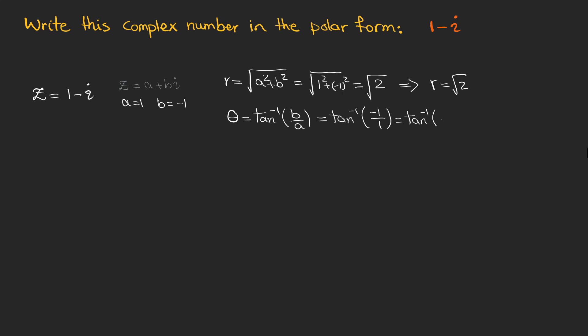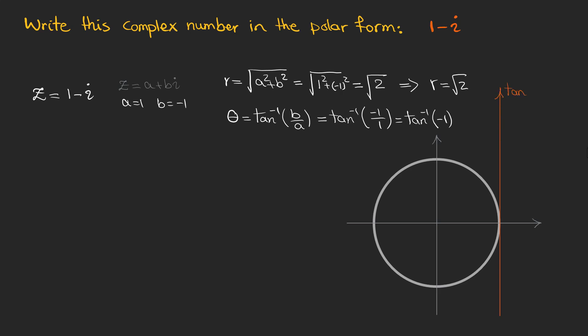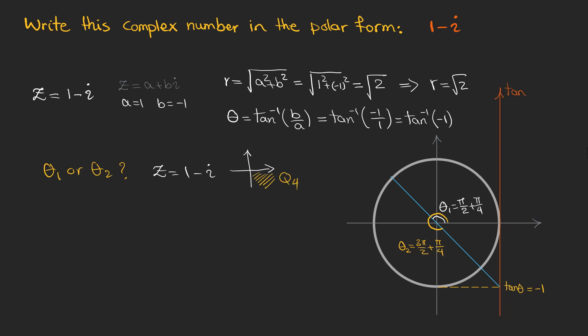Since a is 1 and b is minus 1, theta equals arctangent of minus 1. Let's draw a unit circle and the axis of tangents. Tangent of theta is minus 1, and we have two angles associated with it. The first is theta 1 which is pi over 2 plus pi over 4, and the second is theta 2 which is 3 pi over 2 plus pi over 4. Based on the real and imaginary parts of 1 minus i, our complex number is located in the fourth quadrant.